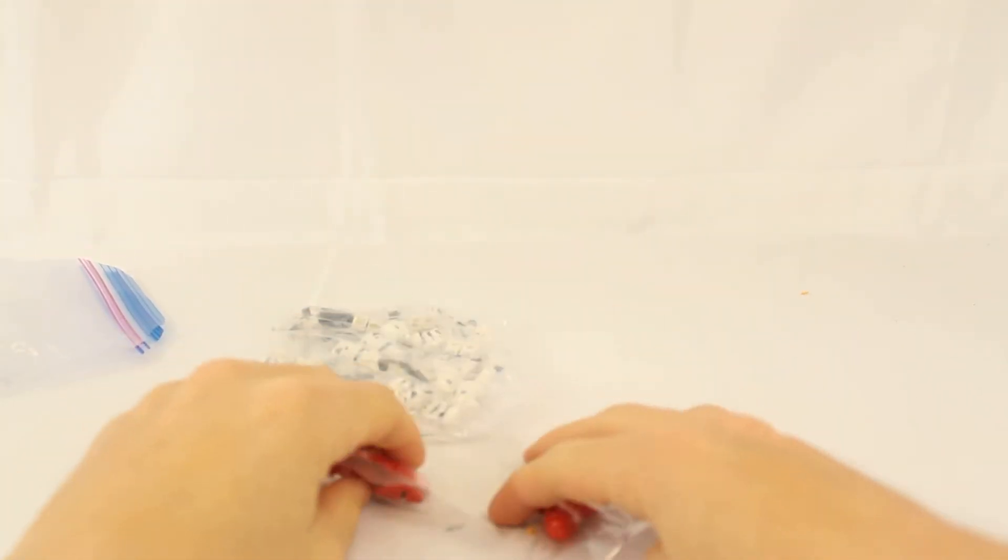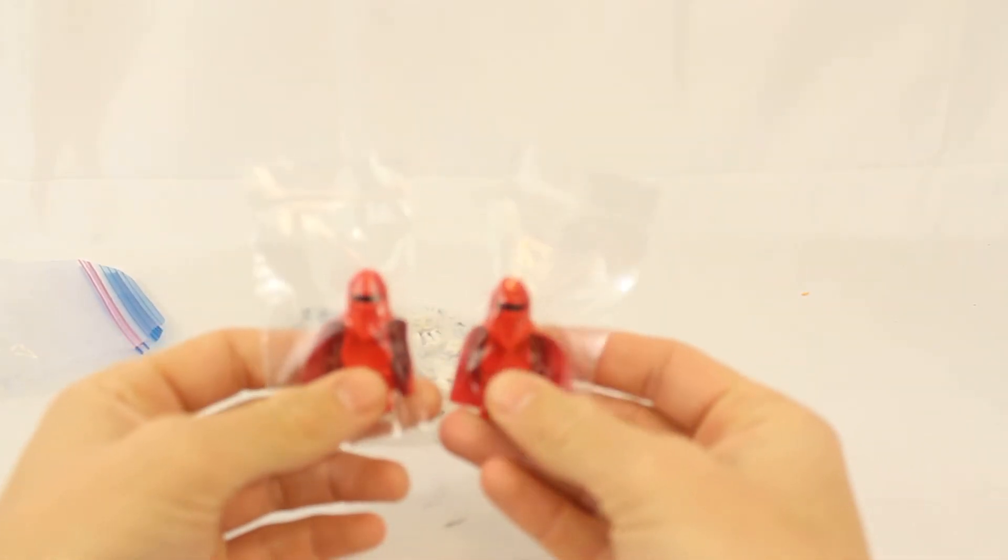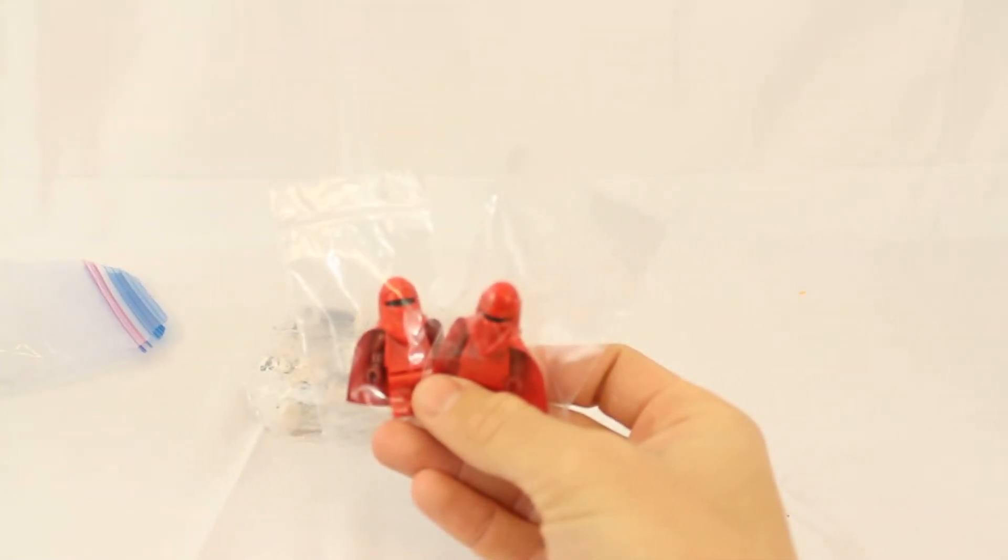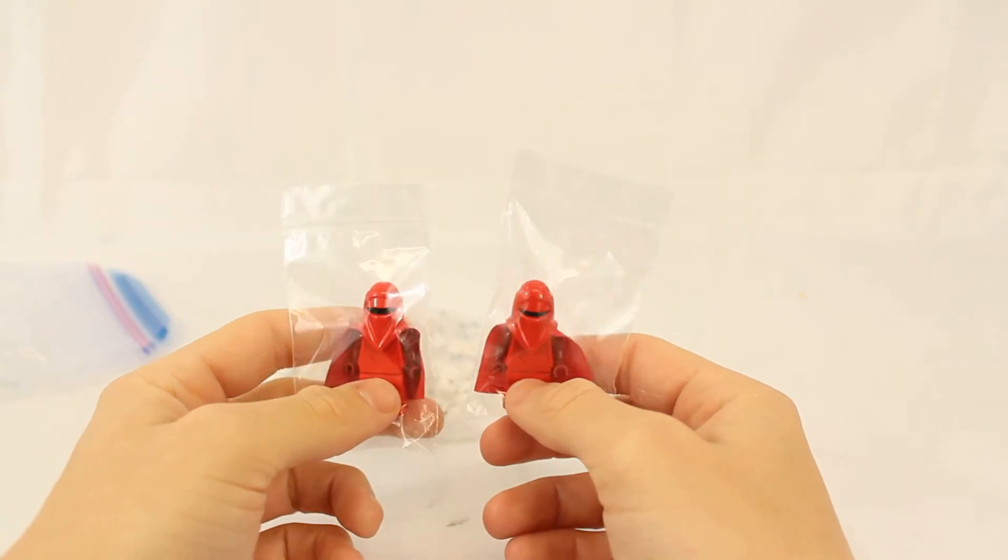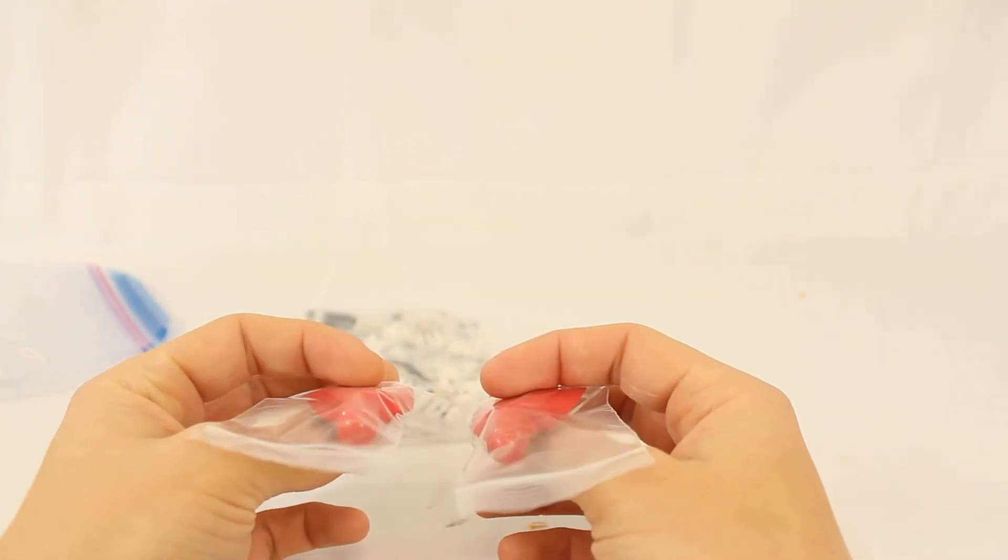As you guys can see, it's a bunch of minifigures. Let's start off with the two individually wrapped guys. We got two red Imperial Guards. I don't have any of these guys surprisingly. I only have the Shadow Guard, so very happy to get these guys to protect Emperor Palpatine.